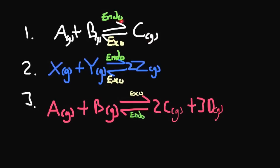As this is an endothermic reaction in the forward direction and exothermic in the backward direction, if we increase the temperature, the equilibrium will shift in the endothermic direction, forming more of C. For question 2, increasing the pressure has no effect because we have two gaseous moles on the left-hand side and two gaseous moles on the right-hand side. Increasing the temperature, however, will shift the equilibrium in the forward endothermic direction, forming more of Z.